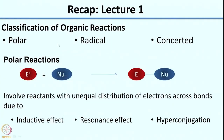After that, we looked at how there is an unequal distribution of electrons across bonds in polar reactions. In particular, we looked at the inductive effect and the resonance effect.